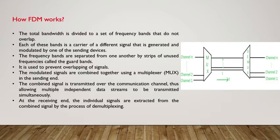The modulated signals are combined together using a multiplexer at the sending end. As you can see in the figure, there are n number of channels which are passed through the multiplexer and sent through a frequency medium. After that, they are demultiplexed to get the desired signal. The combined signal is transmitted over the communication channel, allowing multiple independent data streams to be transmitted simultaneously. At the receiving end, individual signals are extracted from the combined signal by the process of demultiplexing.